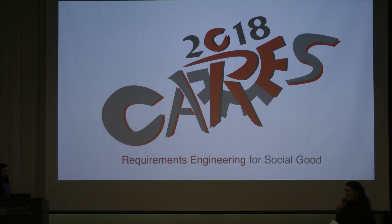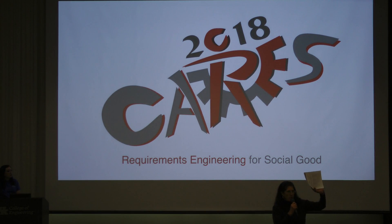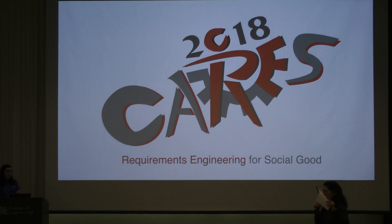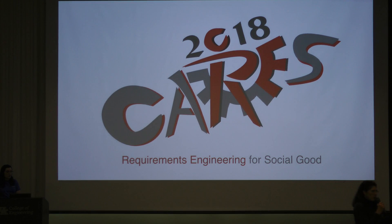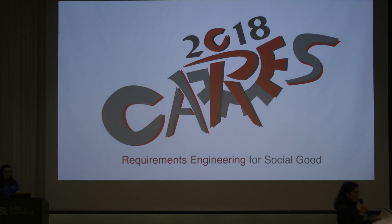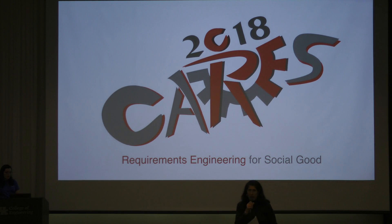We have a paper coming out in IEEE Software in about a month. It's basically a five-step process: Step one, target a conference. Step two, identify a stakeholder with a need for a software product doing social or public good. Step three, organize requirements gathering, design, and a hackathon. Step four, mobilize people to help continue developing the product. Step five, deliver it to the stakeholder.